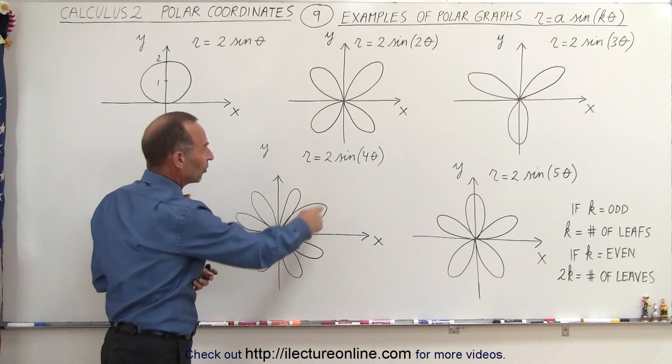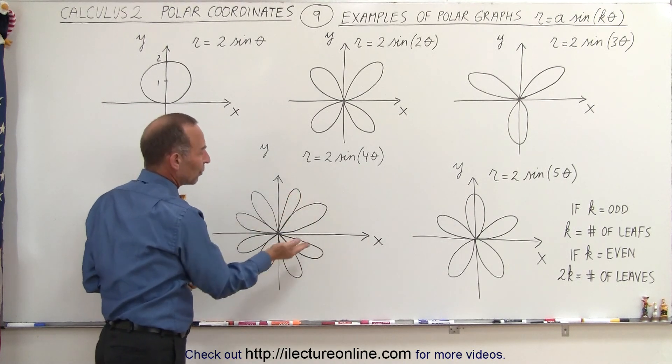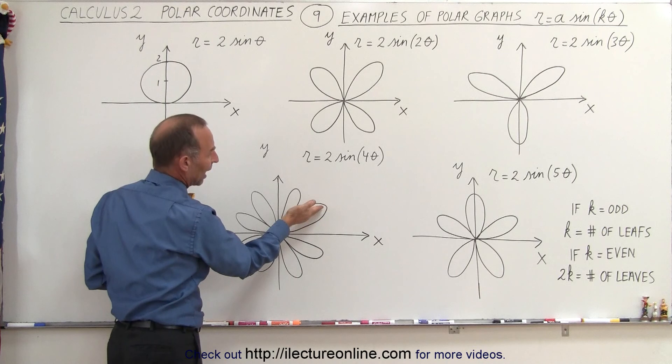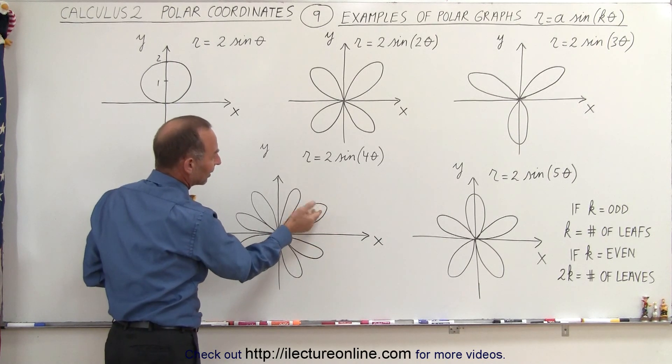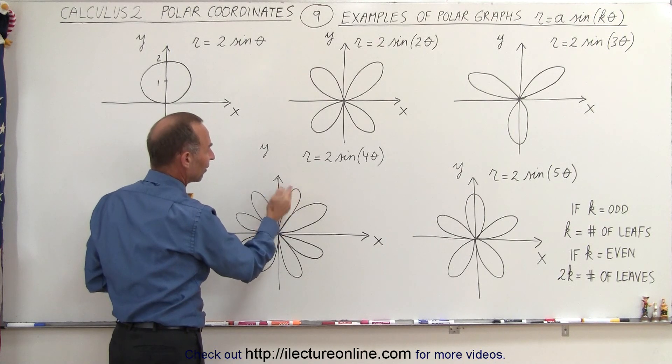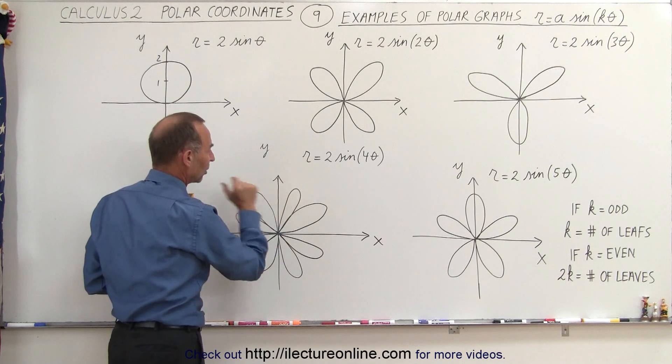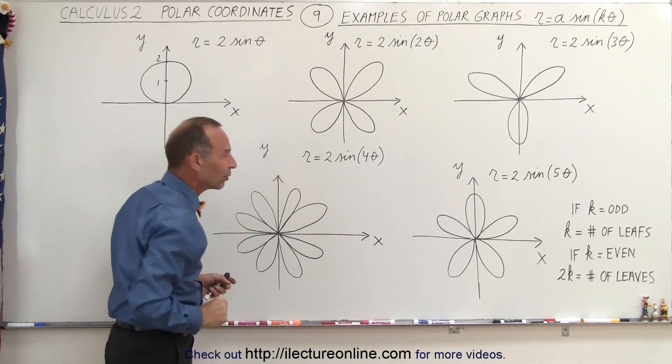Notice that in the case of the sine of 4 theta, the angle between each of the leaves is 45 degrees. So from the x-axis is 22 and a half up, minus 22 and a half down. Then there's a 45 degree angle between the two. So this would then vary from the positive y-axis by 22 and a half degrees, 22 and a half degrees, so the total is 45 degrees and so forth.